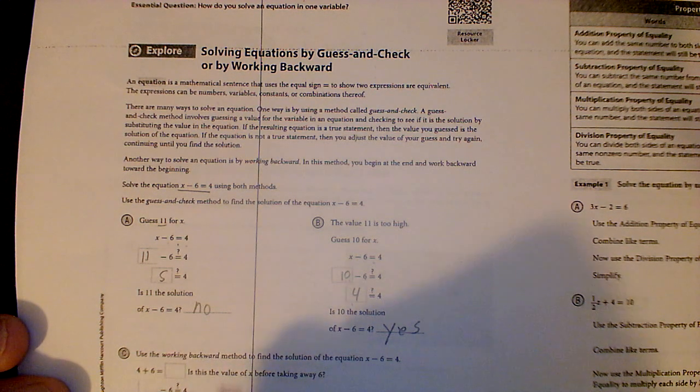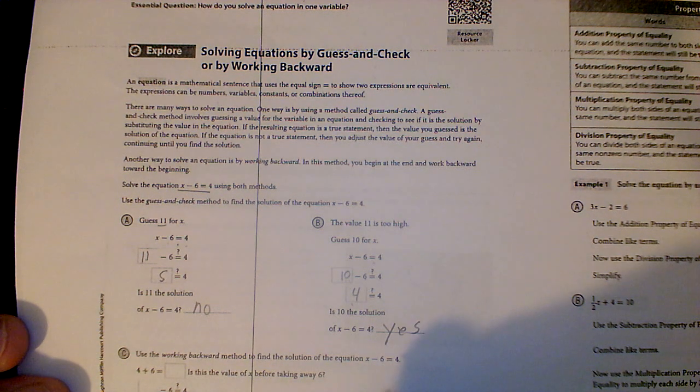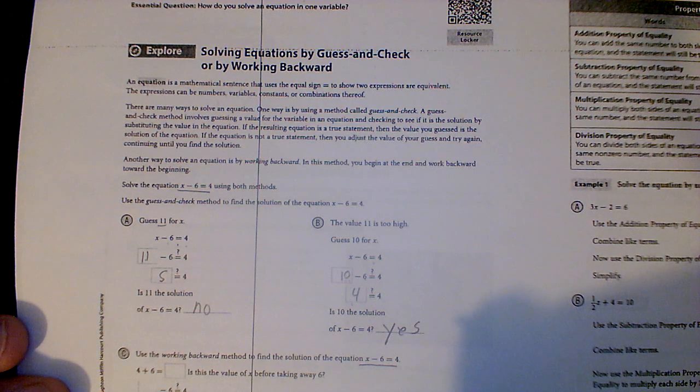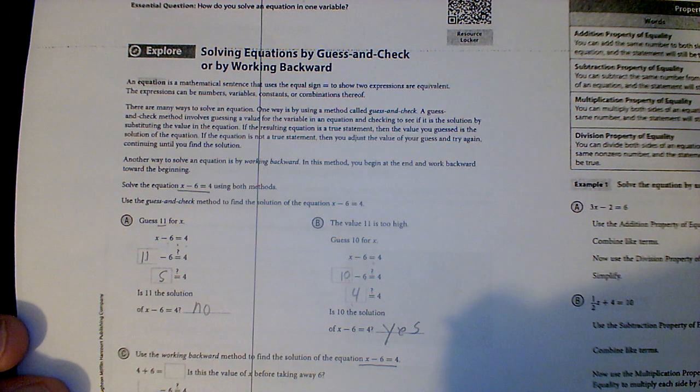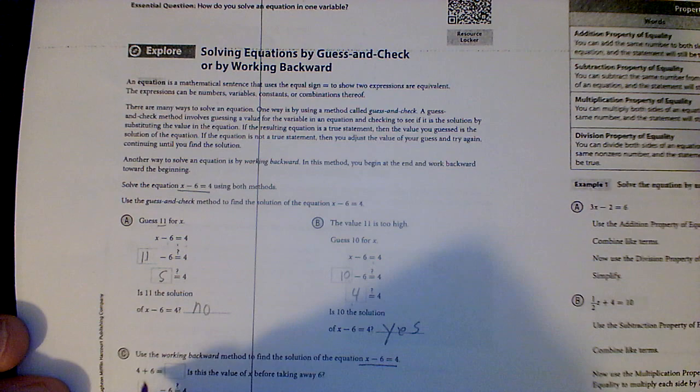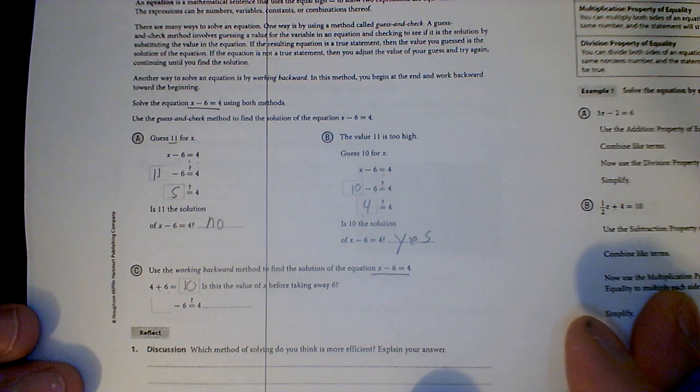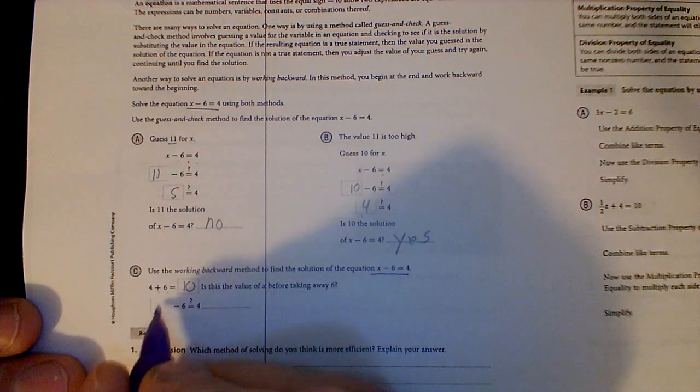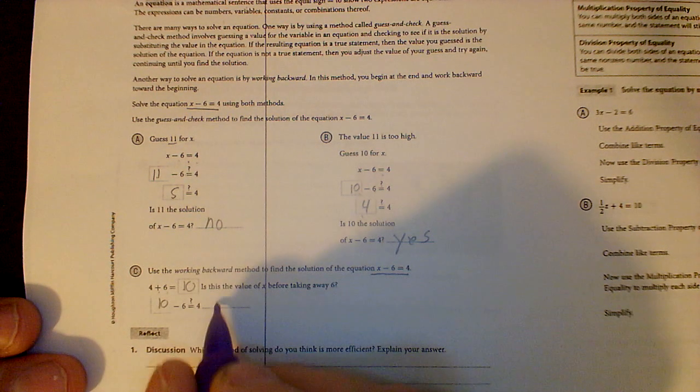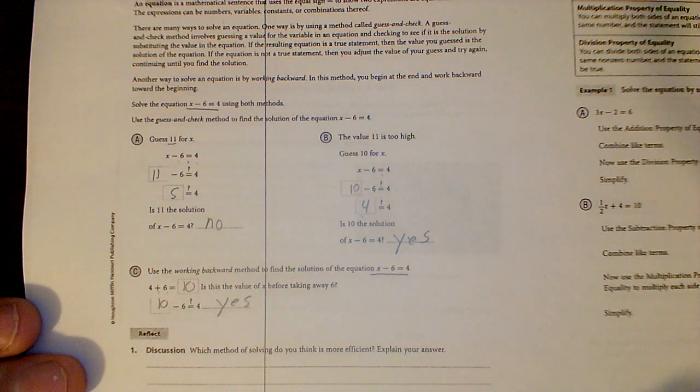Using the work backwards method to find the solution for this equation. So what I could do is this. I could say, you know what, if a number minus 6 is 4, then 4 plus that number must be the answer, right? 4 plus 10 must be the answer. Is this the value? Well, I'll see 10 minus 6 equals 4. Then, well, that's yes. 10 minus 6 is 4.